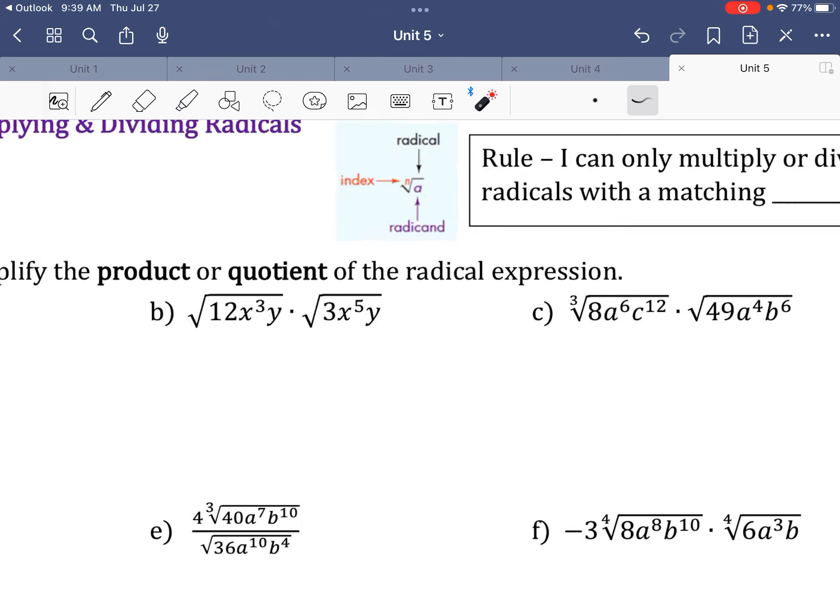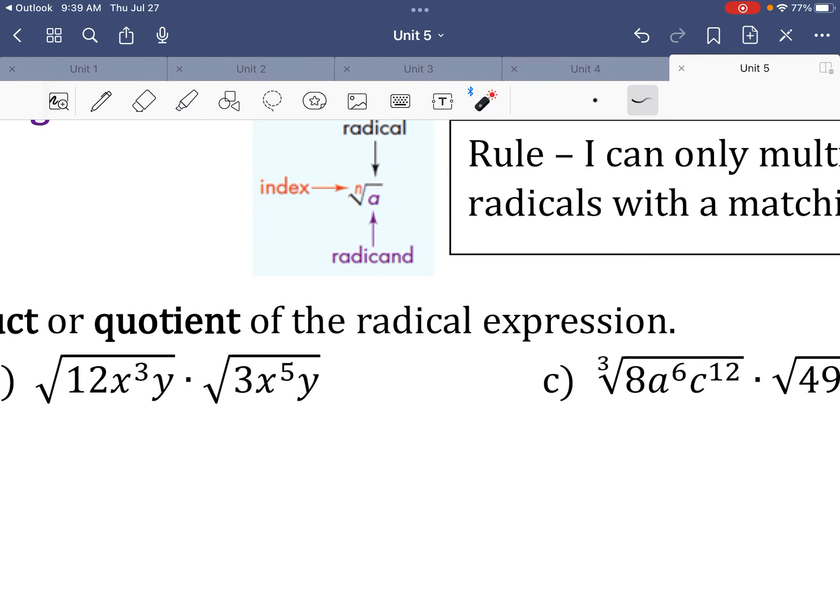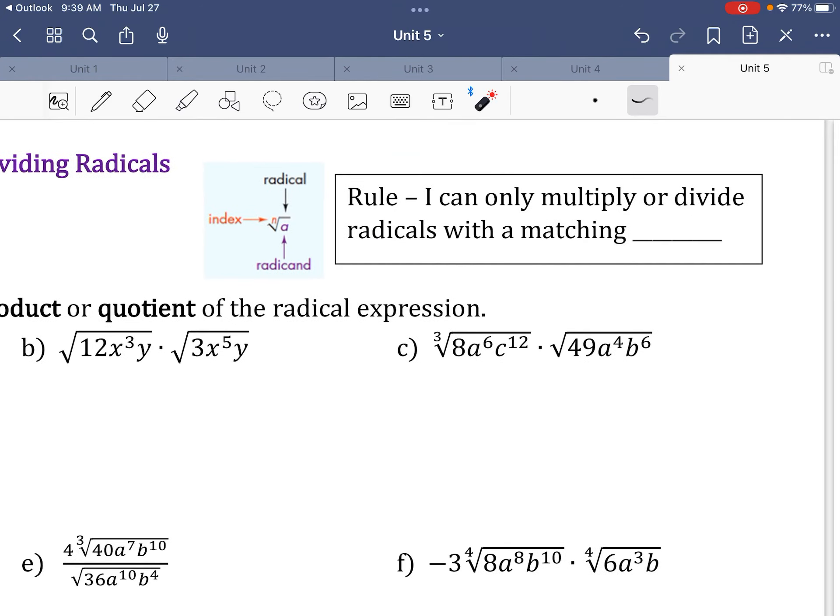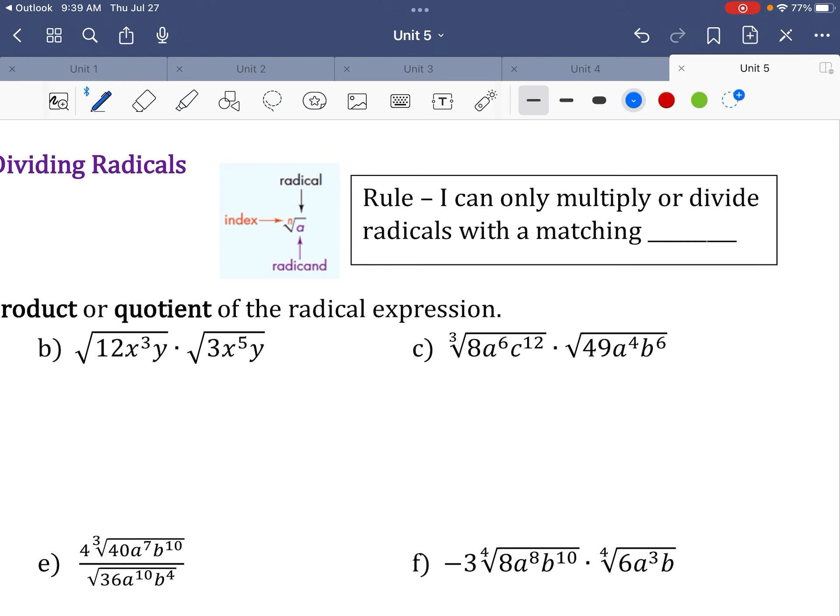This number here is important, it's called the index, all right, so that's the type of radical, like square root, cube root, fourth root, things like that. There's something inside the radical that's called the radicand, okay, so you don't hear that that much, but sometimes.